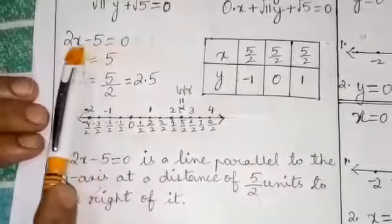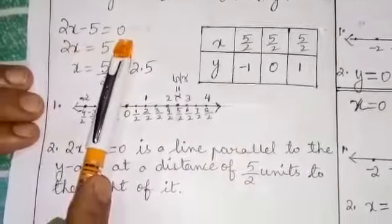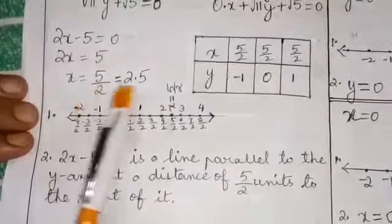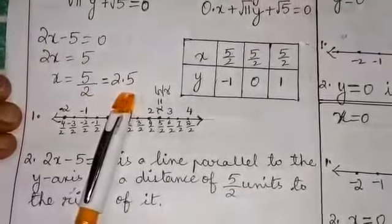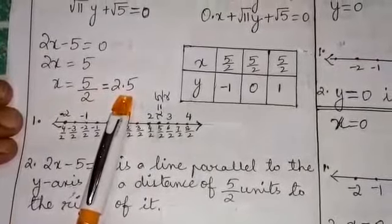Consider the equation 2x minus 5 is equal to 0. On solving we have x is equal to 5 by 2 or 2.5. Let's represent this solution on a number line.